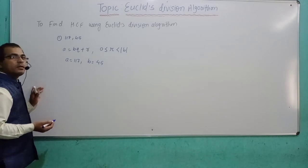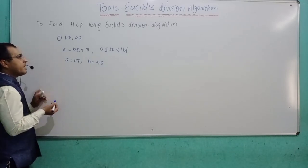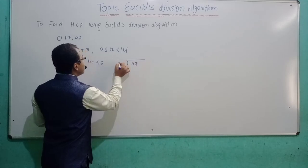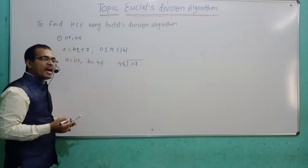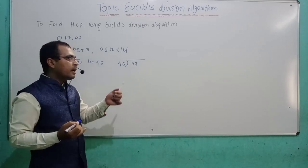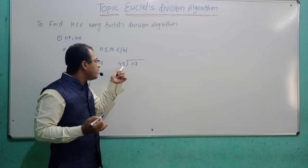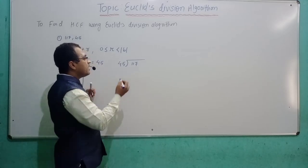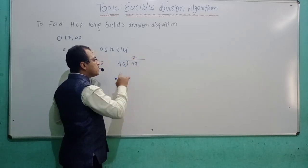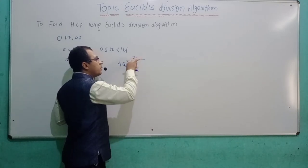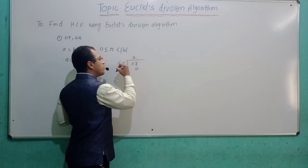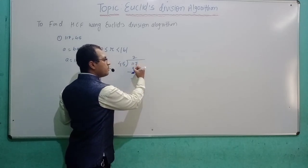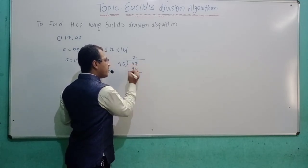You can see that 117 is divided by 45. You will have to read the table of 45 and check how many times 45 goes into 117. It is clear that 45 goes 2 times into 117. 2 fives are 10, 2 fours are 8 — that gives 90. Subtracting: 117 minus 90 gives remainder 27.